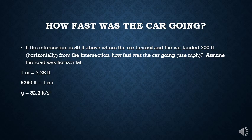So if this intersection is 50 feet above where the car landed and the car landed 200 feet horizontally from the intersection, how fast was the car going? We're going to figure this out using projectile motion. We're also going to go ahead and use feet and miles and seconds just because that makes a lot more sense to most of us when we think about how fast a car was going.